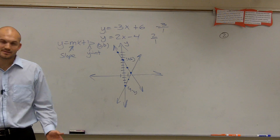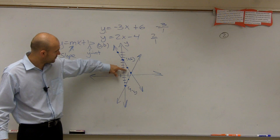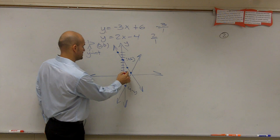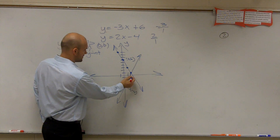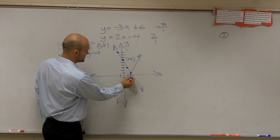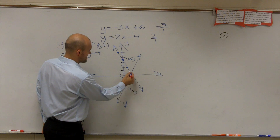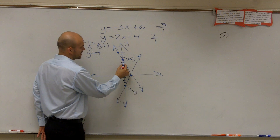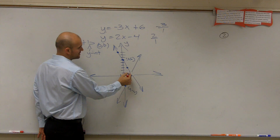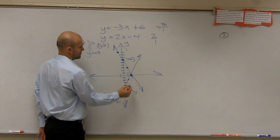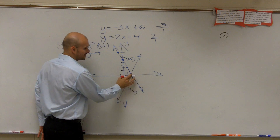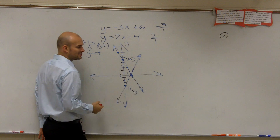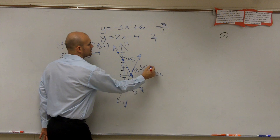Now we can see that they do intersect. Let me double-check by going down 3 over 1 from the y-intercept of 6 — down 3, over 1. My graph was a little bit wrong. Going down 3 over 1 correctly, the lines should be crossing at x equals 2. Sorry about that — that's why we use grid paper. Going up 2 over 1 for the other line — the intersection is at (2, 0), which we call our solution.